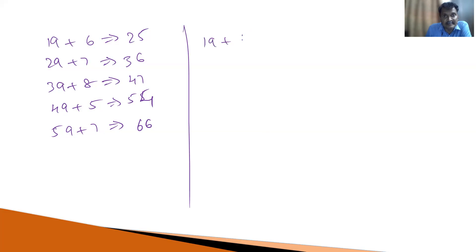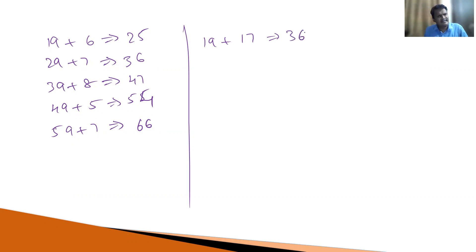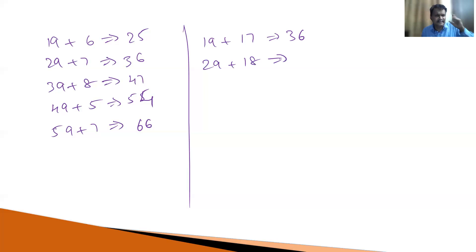Suppose 19 plus 17. What is the answer? 19 becomes 20. What is 20 plus 17? It's very simple — 20 plus 10 plus 7, that equals 37. Keep in your mind. Now you need to subtract 1 from 37. The answer is equal to 36. Suppose 29 plus 18: observe 29, that is equal to 30. 30 plus 18 is 48. 48 minus 1, that equals 47 is the answer.